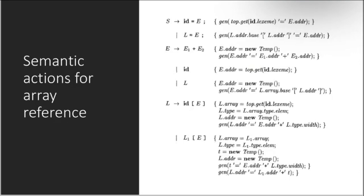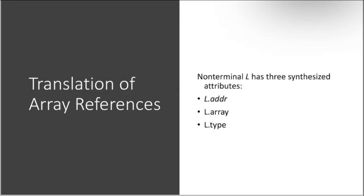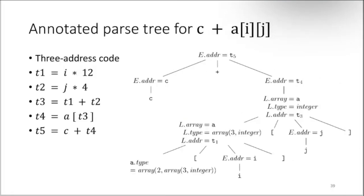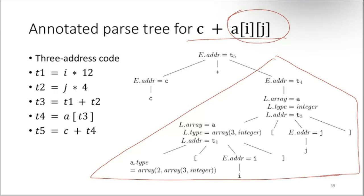Semantic actions for array reference translation of array references: like l dot address, l dot array, and l dot type, all these things we understand. Syntax tree for c plus a. You can see a is an array, so how the parse tree will look like. You can see basically this part is for a[i][j] and this part is for c.